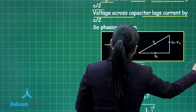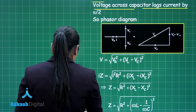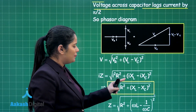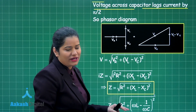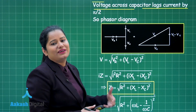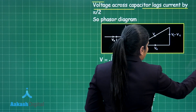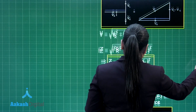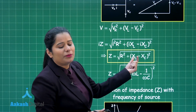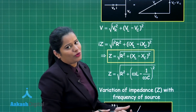From this you can draw the phasor diagram, and from the phasor diagram you can calculate the impedance. The impedance comes out to be Z = √(R² + (X_L − X_C)²), where X_L is the reactance of the inductor and X_C is the reactance of the capacitor. X_L is the product of omega and inductance L, and X_C is 1/(ωC), where omega is the angular frequency and C is the capacitance.